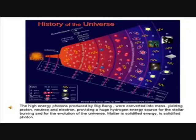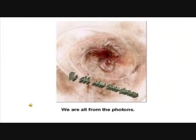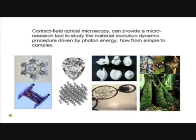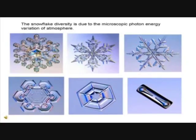The high-energy photons produced by the Big Bang were converted into mass, yielding protons, neutrons and electrons, providing a huge hydrogen energy source for stellar burning and for the evolution of the universe. Matter is solidified energy — is solidified photon. We are all from the photons. Contact field optical microscopy can provide a micro research tool to study the material evolution dynamic procedure driven by photon energy — how from simple to complex.